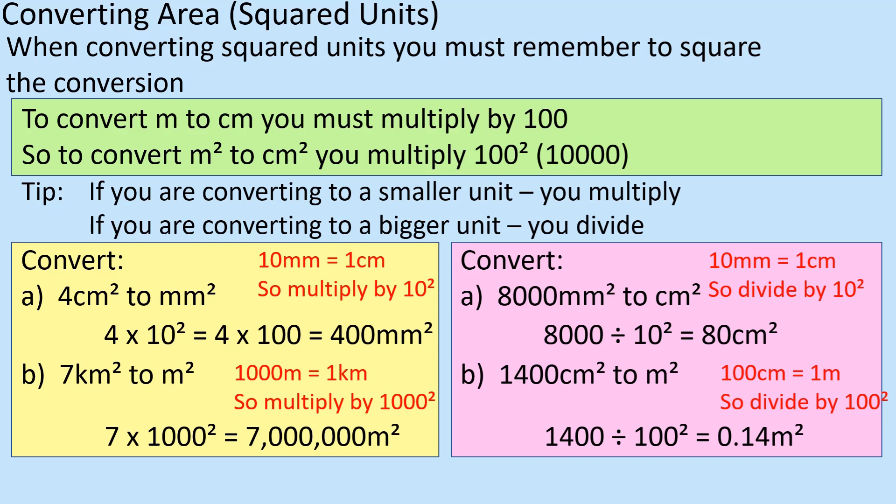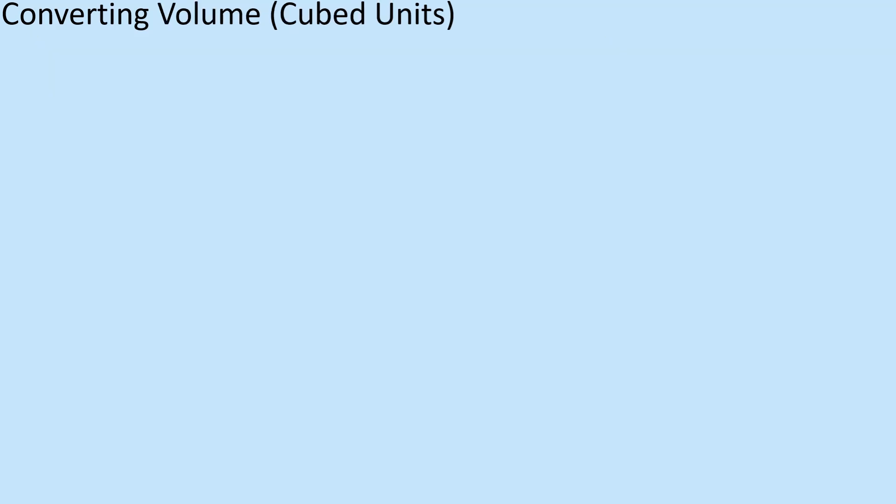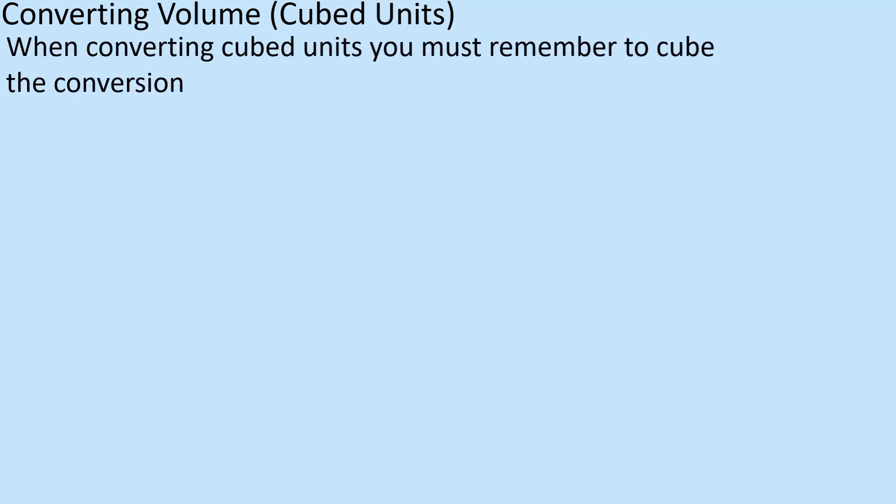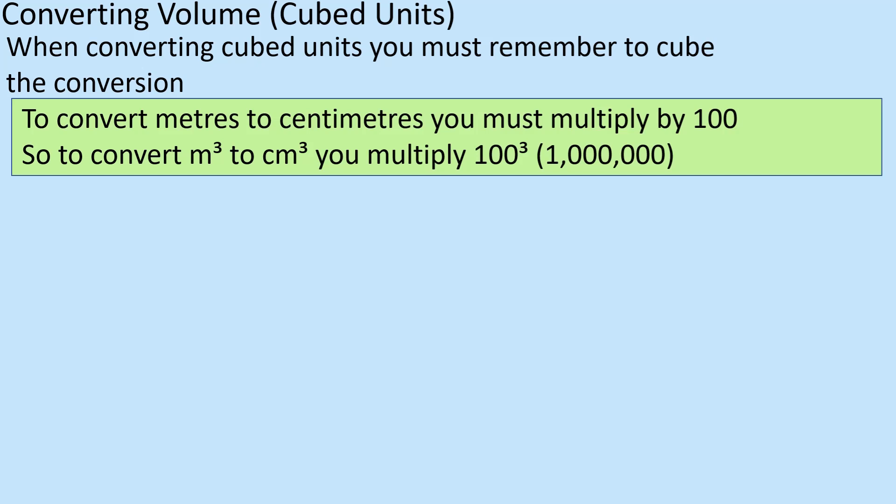That's the process for square units. Now we'll move on to cube units — the method is essentially the same. Rather than applying the conversion once for linear units, or twice for squared units, for cubed units you apply it three times. So to convert metres to centimetres you multiply by 100, but to convert metres cubed to centimetres cubed, you multiply by 100 cubed — three times.